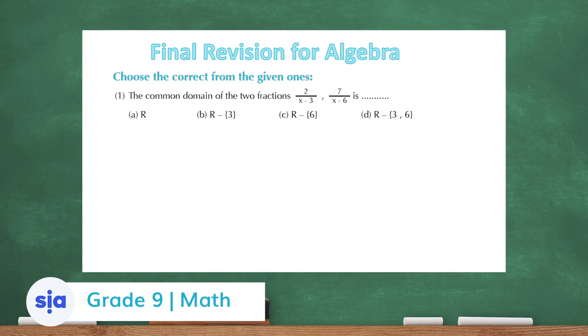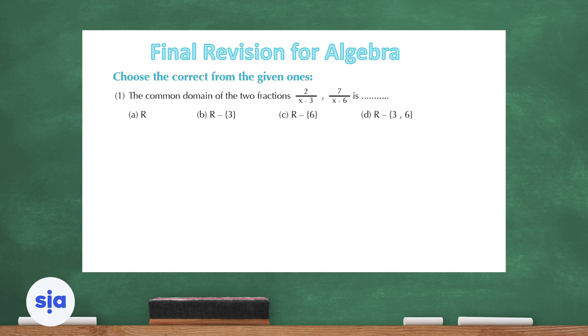Welcome dear students to our final revision session in algebra. It's a multiple choice question. Question 1: the common domain of the two fractions 2 over x minus 3 and 7 over x minus 6. The domain of the first fraction is all numbers except 3, and the domain of the second fraction is all numbers except 6. So the common domain is all numbers except 3 and 6.